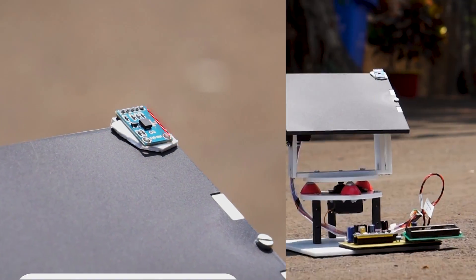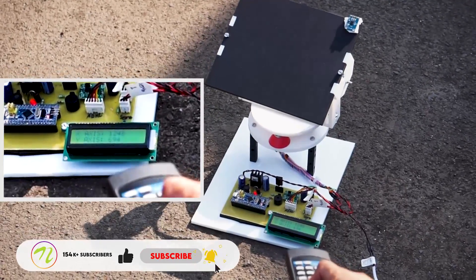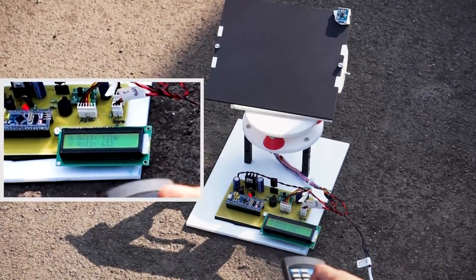Now, we use an accelerometer sensor mounted on the antenna which is used to detect the current position of the antenna and display it on the LCD display.